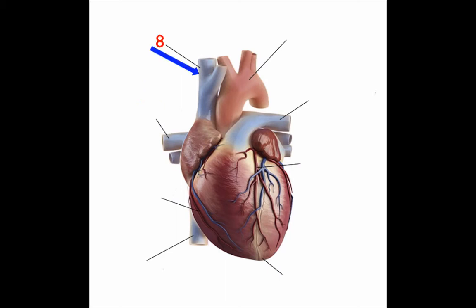And the last structure, structure number eight. This structure returns deoxygenated blood from the upper half of the body into the right atrium of the heart. What is this structure? Structure number eight.